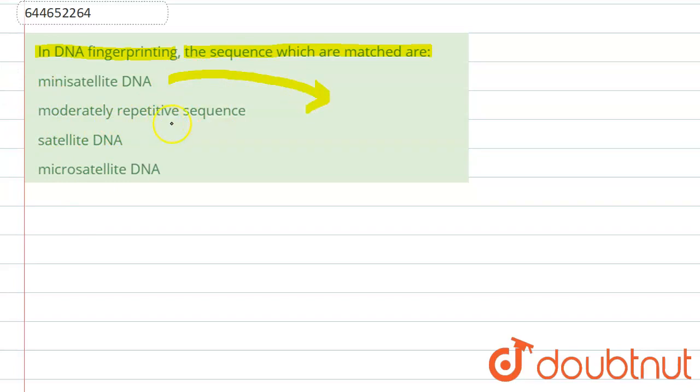Minisatellite DNA is a tract of repetitive DNA. It is 5 to 50 times repetition occurring in the DNA. It cannot be used in DNA fingerprinting for sequence matching, so option one is wrong.